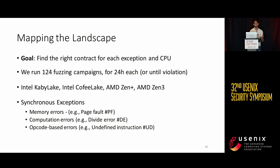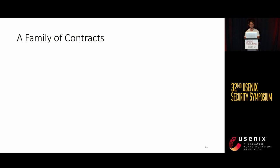Our goal is to map each exception and CPU pair into a contract that describes the expected information leakage. We ran 124 fuzzing campaigns for 24 hours each, or until we find a violation, across four CPUs. We focus on synchronous exceptions — memory errors, computation errors, or code-based errors — and we test each exception on our target CPUs against a family of contracts.